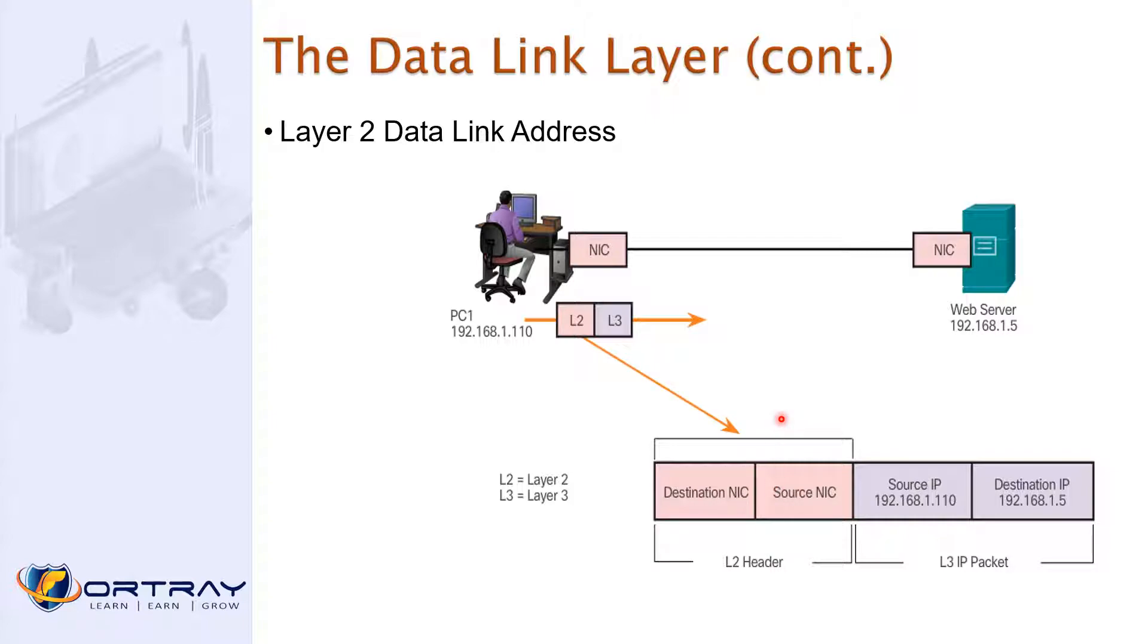Anybody remember how it does add the layer 2 information? This guy has the IP address of this guy, right? But he doesn't know the MAC address. In order to communicate, we need two things. We need MAC address and we need the physical address and the logical address. Now this guy, he has no idea about the logical address of this guy. What is he going to do?